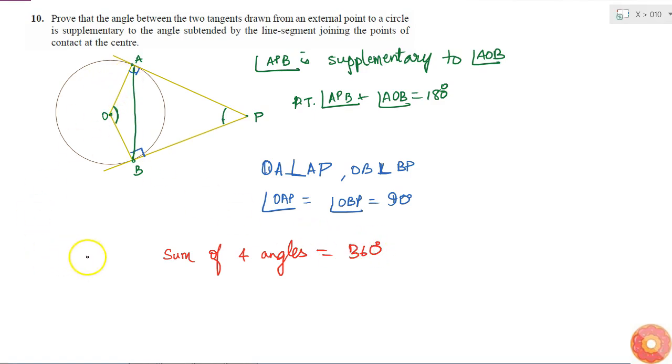So what is the quadrilateral here? So if I consider this quadrilateral which is AOBP, that is this one. Then sum of four angles is 360 degrees.